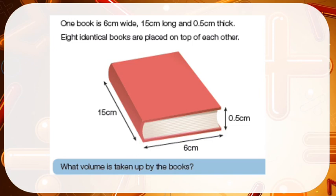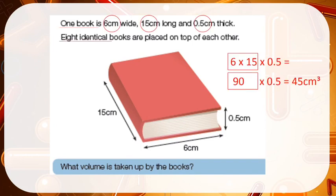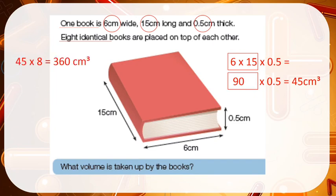The next question: one book is 6cm wide, 15cm long, and 0.5cm thick. Eight identical books are placed on top of each other. What is the volume taken up by the books? This is a two-step problem. First I need to find the volume of one book by multiplying 6, 15, and 0.5 together. I multiplied 6 and 15 to get 90, then multiplied by 0.5 — which is multiplying by half — giving 45cm cubed. The second step is to multiply by 8, because there are eight identical books. 45 multiplied by 8 is 360cm cubed.